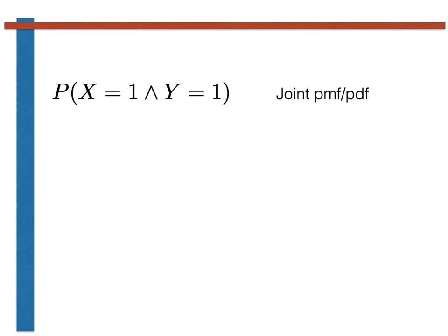The second method for discussing the relationship between random variables is the conditional probability. The conditional probability shown here tells us the probability that the random variable capital X equals 1 given that the random variable capital Y equals 1.